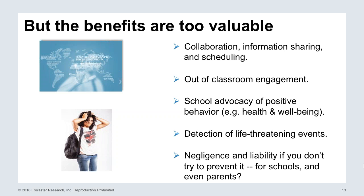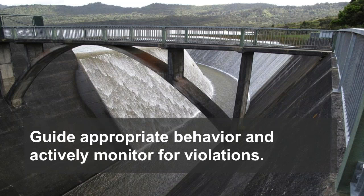So what do we do about this? There's a lot of risks, a lot of benefits, and a lot of reasons why we need to be providing the right controls. What we need to do is guide appropriate behavior and actively monitor for violations. We have to think about the overall flooding of all these channels and figure out how we can provide the right guidelines to guide the right behavior while still enabling the right benefits.